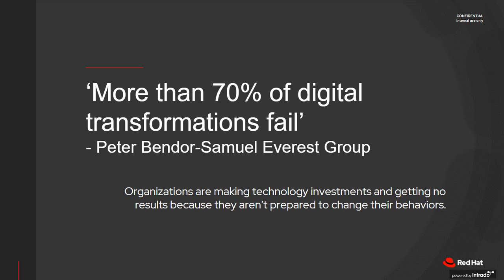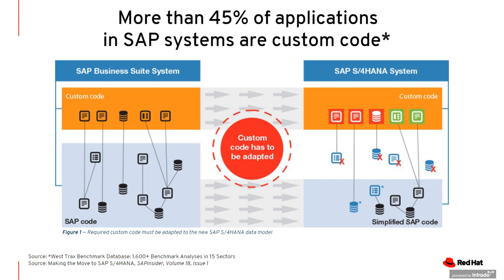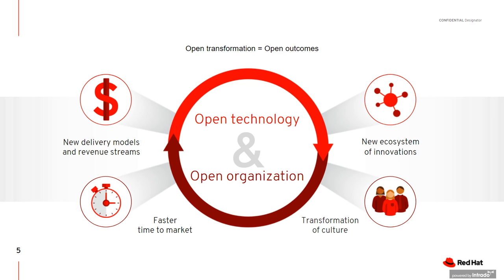The bad news is that more than 70% of digital transformations fail. And the reason could be, especially in the SAP world, because more than 45% of applications are custom code. So the objective today is to understand how Red Hat can support you and drive your modernization path, combining our open technology and our open organization experience.